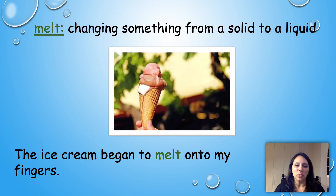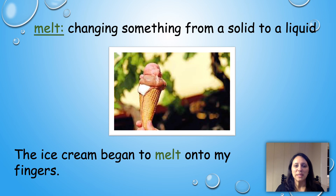Our next word is melt. Melt is changing something from a solid to a liquid. The ice cream began to melt onto my fingers. Can you think of something that has melted before? Try using melt in a sentence.